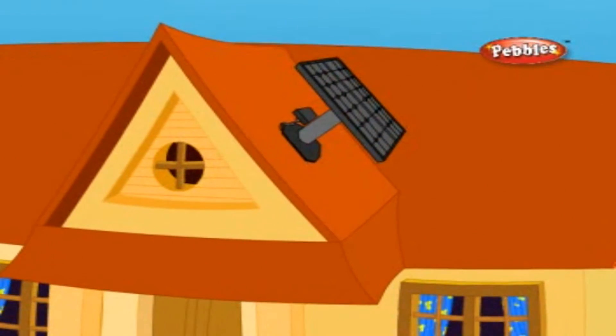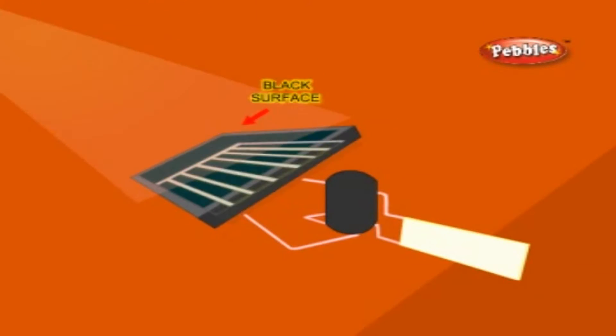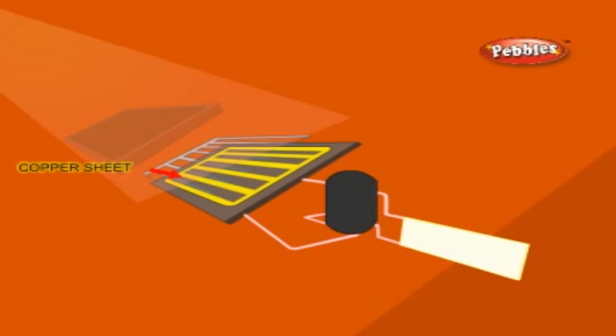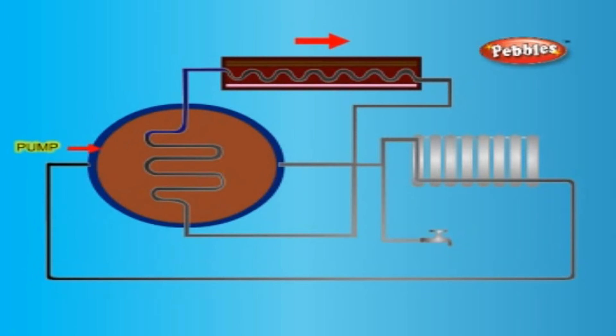At night or when insufficient sunlight is present, circulation through the panel can be stopped by closing a valve and stopping the circulating pump to keep hot water in the storage tank from cooling.